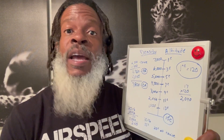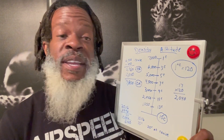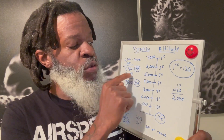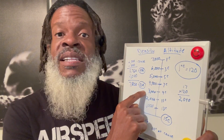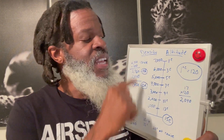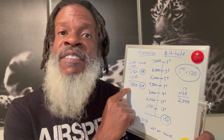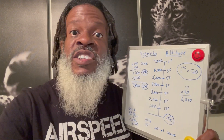Simple formula: for every degree Celsius that is higher than standard, we add 120 feet. We have a 17-degree difference — actual temperature is 20°C, standard should be 3°C. So we take 17 times 120 and get 2,040. We add that 2,040 to our pressure altitude of 5,760, and there is our density altitude: 7,800 feet. Even though we're flying at 6,000 feet, the plane will perform as if we were at 7,800 feet.